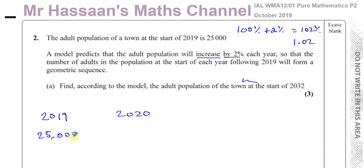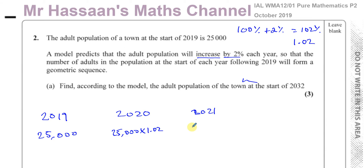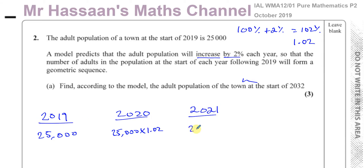So at the start of 2020, it's going to be 25,000 multiplied by 1.02. In 2021, that value is going to be multiplied by 1.02 again — it keeps increasing by 2% every year. So 2021 will be 25,000 multiplied by 1.02 squared, the next will be cubed, and so on.